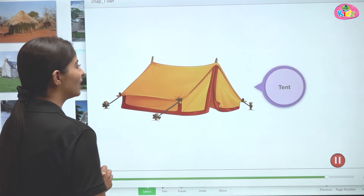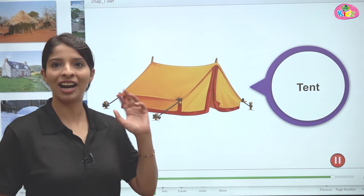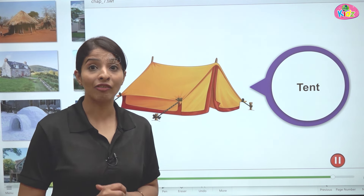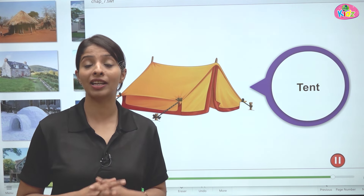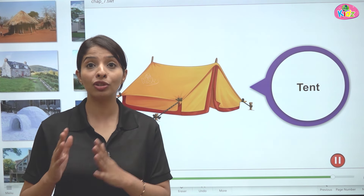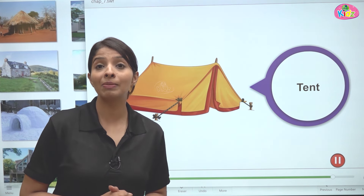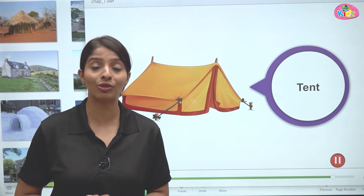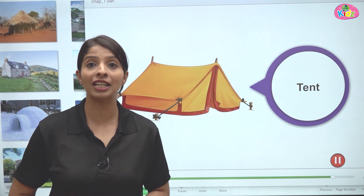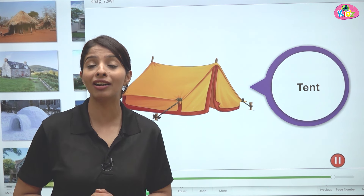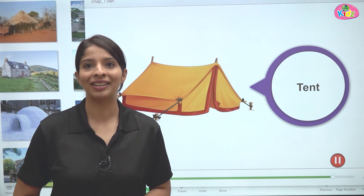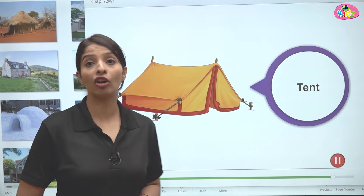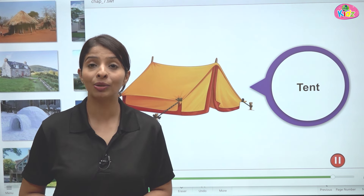The next type of house is the tent house. Tent houses are made from canvas material and many other materials. People who travel from one place to another live in tents. As you must have seen, many trekkers, when they need to stay on a hill or mountain, put up a tent and live in it. They keep themselves safe by living in a tent, and it is also very easy to set up.